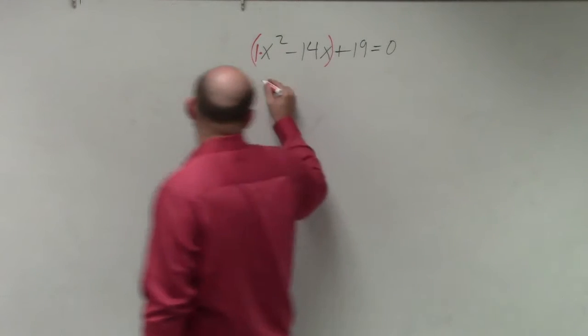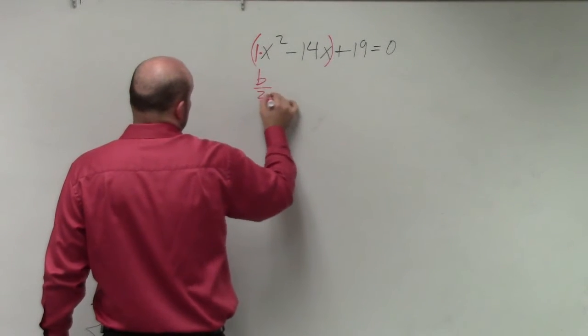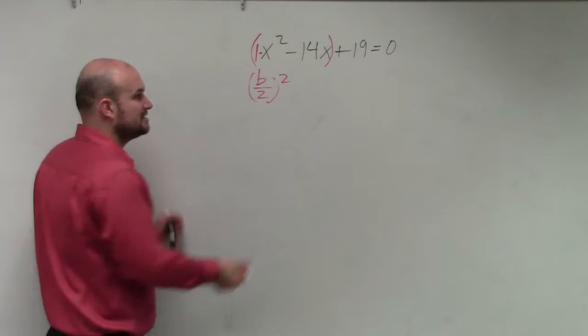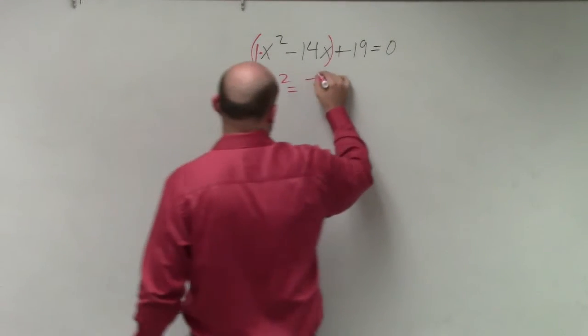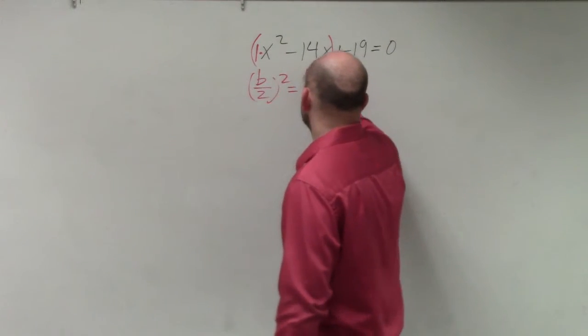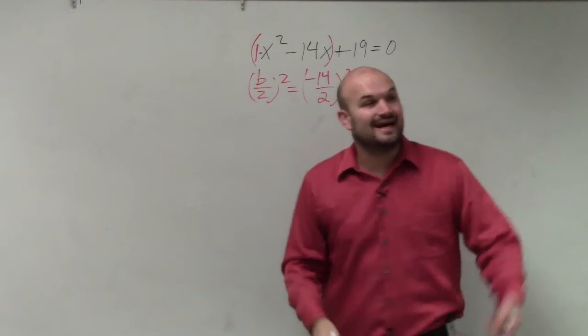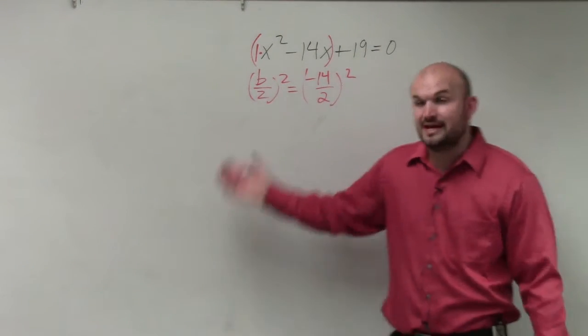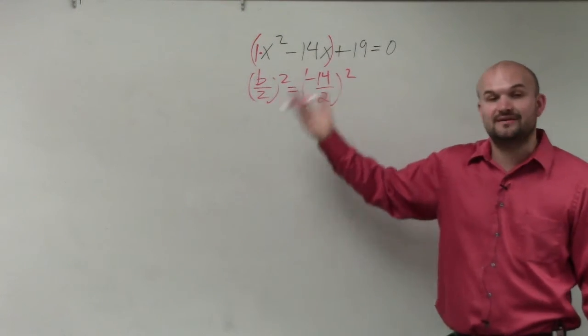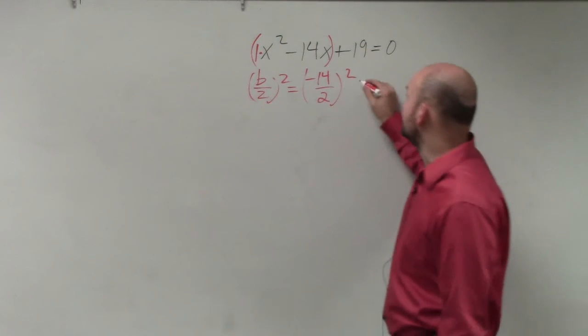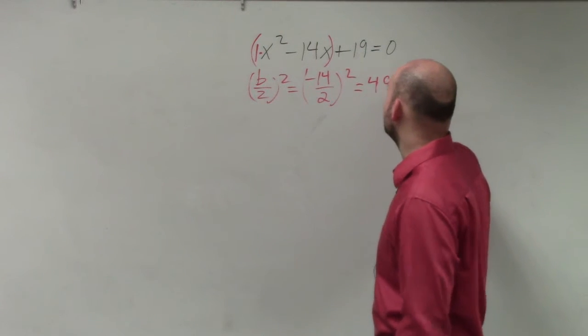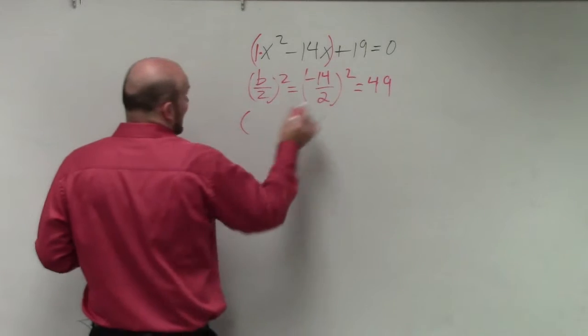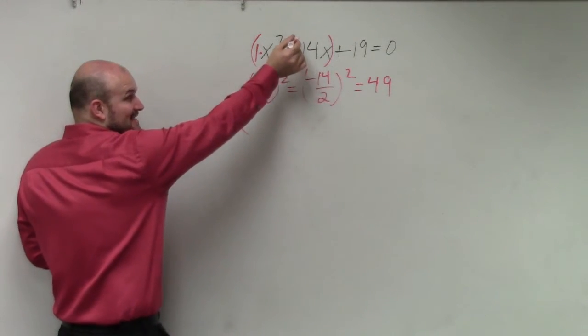The next step is to find the value b that completes the square. That was on your homework, right? That's what we practiced. So in this case, I have negative 14 divided by 2 squared. Again, following the order of operations, negative 14 divided by 2 is negative 7. Negative 7 squared is going to be a positive 49.